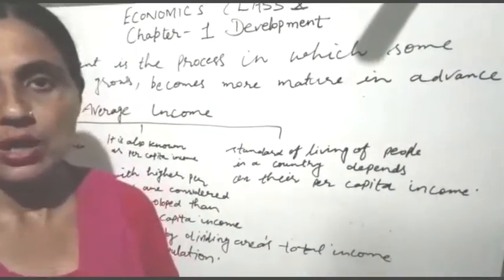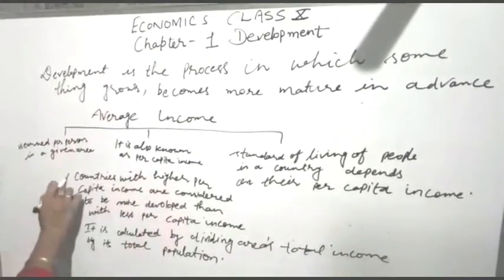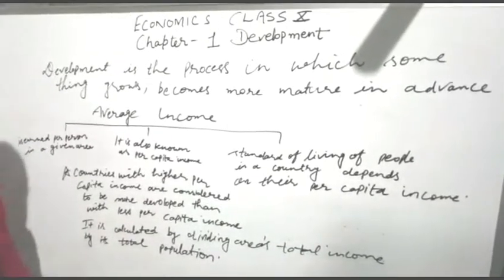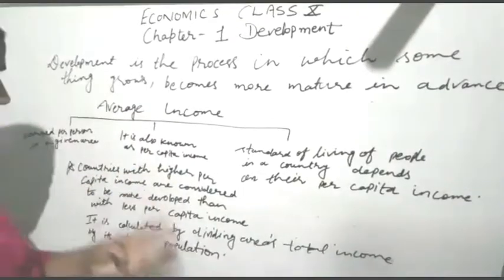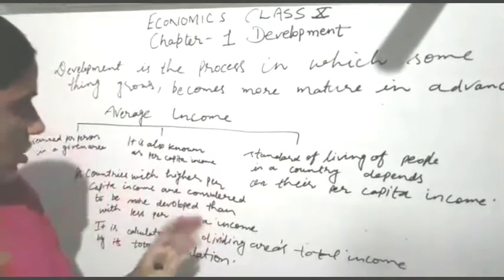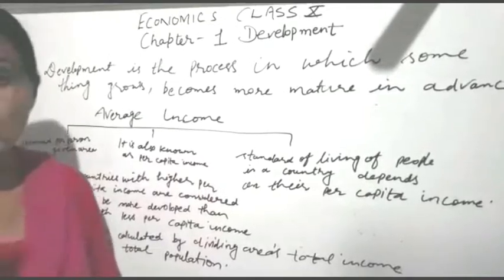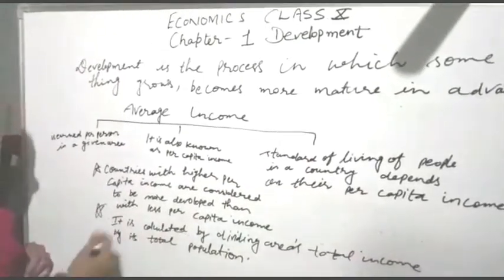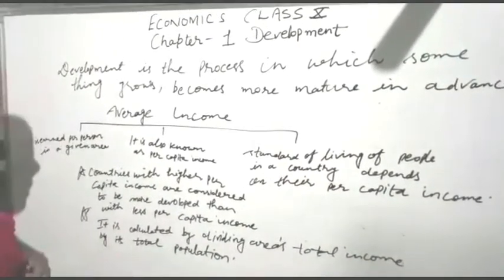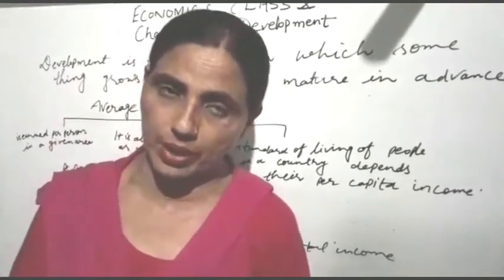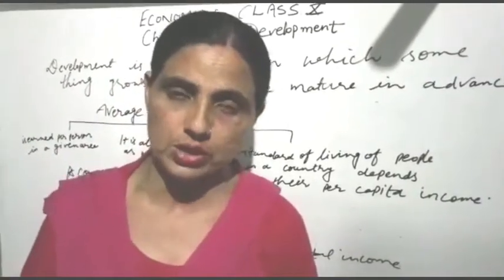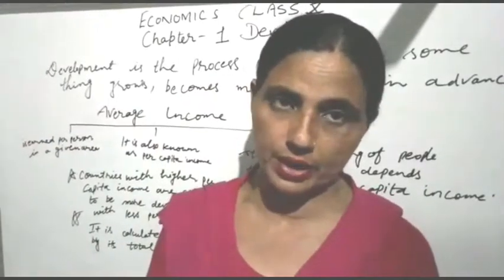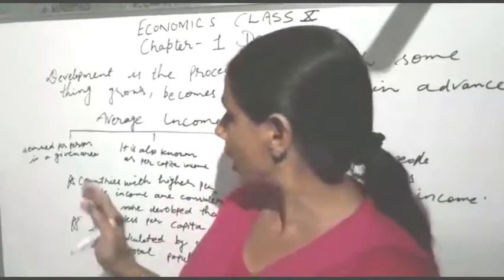The fourth point is: countries with higher per capita income are considered more developed than those with less per capita income. Per capita income is calculated by dividing the area's total income by its total population. The developmental keys are: development, per capita income, and national income.